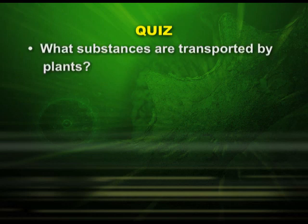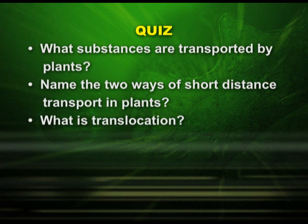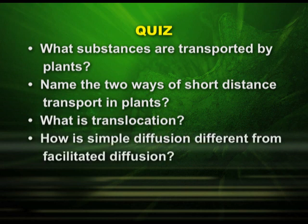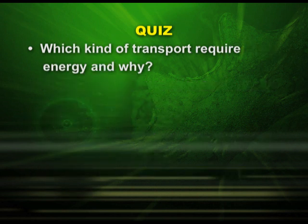Dear students, let us have a simple quiz. Try to answer the following questions: What substances are transported by plants? Name the two ways of short distance transport in plants. What is translocation? How is simple diffusion different from facilitated diffusion? Differentiate between symport and antiport. And finally, which kind of transport requires energy and why?